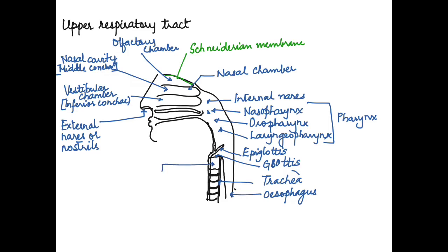At the opening of the trachea is present the larynx or the voice box. This helps in producing sound. Here are present the vocal cords or the muscles which help in producing the sound.